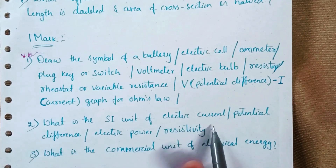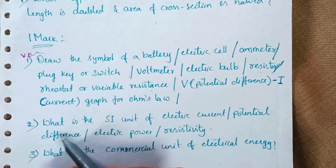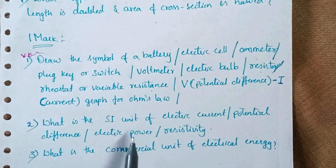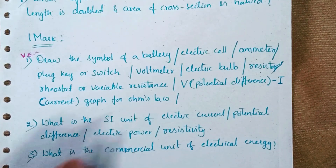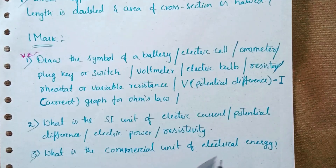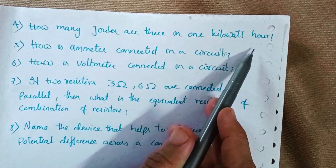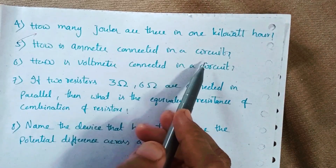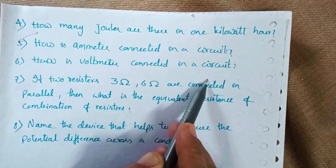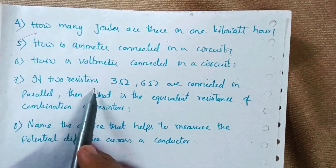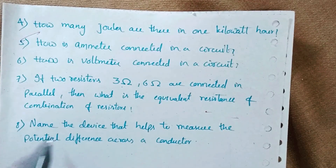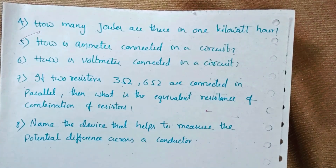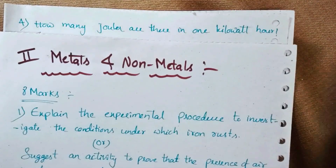More one-mark questions: What is the SI unit of electric current? Write the SI unit of potential difference. What is the SI unit of electric power? What is the SI unit of resistivity? What is the commercial unit of electrical energy? How many joules are there in one kilowatt-hour? How is an ammeter connected in a circuit? How is a voltmeter connected in a circuit? If two resistors are connected in parallel, what is the equivalent resistance? Name the device used to measure the potential difference across a conductor.